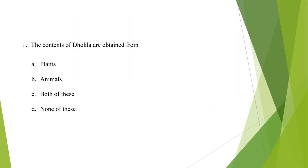It's time for an exam. Now let's revise what we have learnt today by solving the following questions. Your first question is: the contents of dhokla are obtained from — A. Plants, B. Animals, C. Both of these, D. None of these. The correct answer is Plants.